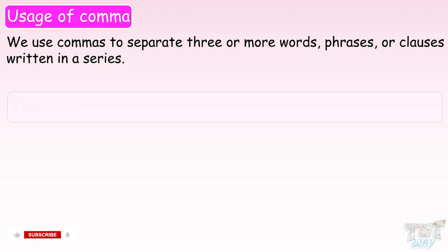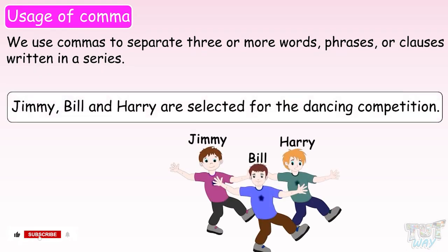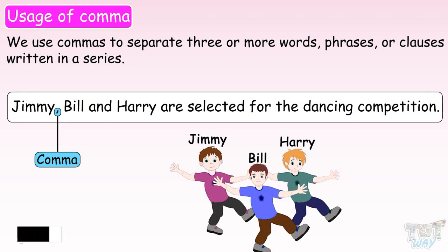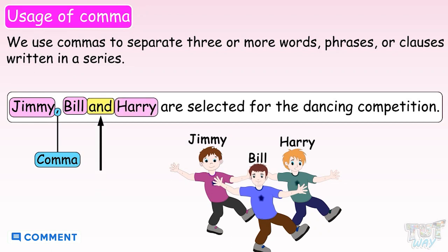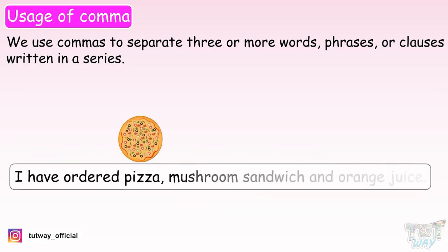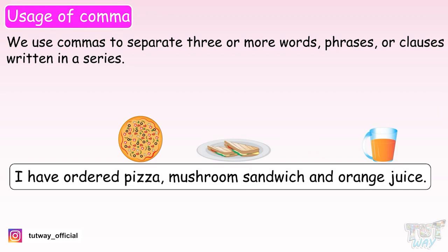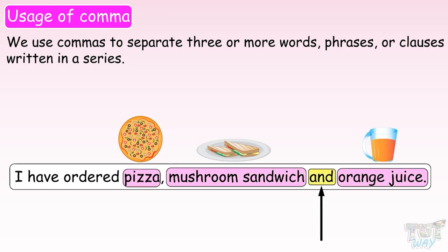Let's learn with examples. Jimmy, Bill and Harry are selected for the dancing competition. Here, we have used commas to separate the names. Did you notice that we have put AND before the last name and not a comma? I have ordered pizza, mushroom, sandwich and orange juice. Again, you can notice that we have used AND before the last item and not a comma.